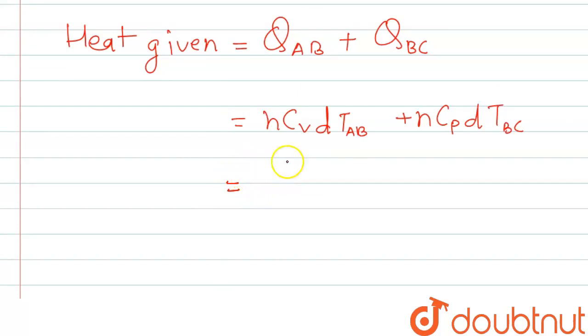So we can write this as 3/2 nRT. Now we have written this in terms of n and R when we have removed C_v and C_p. So this can be written as 3/2 nR(T_B - T_A), and this part can be written as...